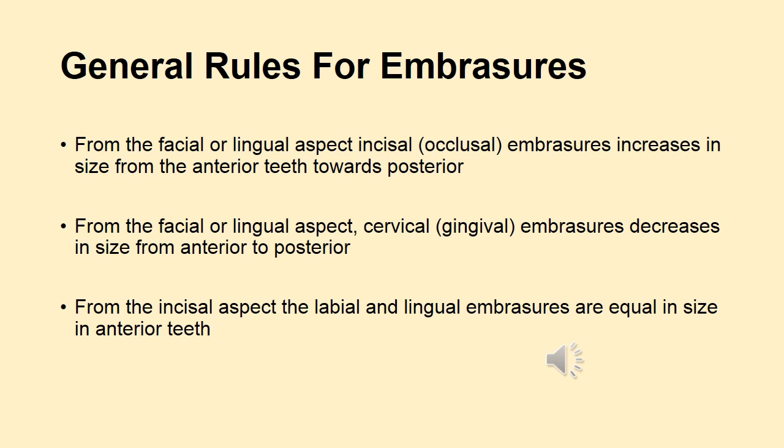The reason is because in the anterior teeth, the contact area is going to be present in the center in the labio-lingual dimension. That is why both labial and lingual embrasures are going to be equal in size.